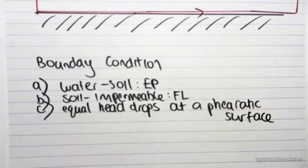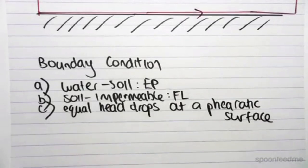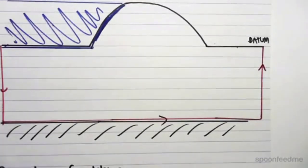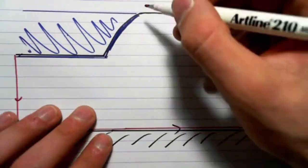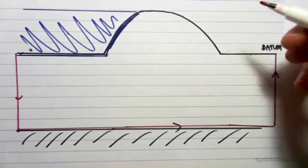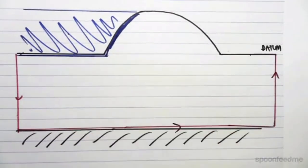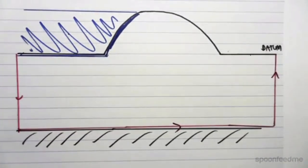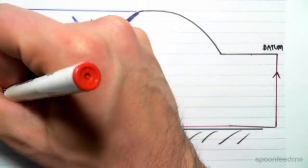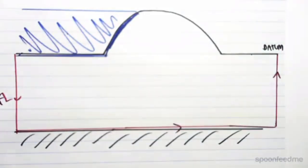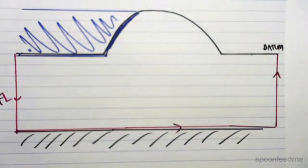And the third boundary condition is that we have equal head drops at something called a phreatic surface. And we'll see what that is in a second. So we're going to come back to this one in a sec. But we can start filling in everything else. So, we know that the water is going to flow from here to here. We also know that equipotential lines and flow lines have to be perpendicular and form curved linear squares.